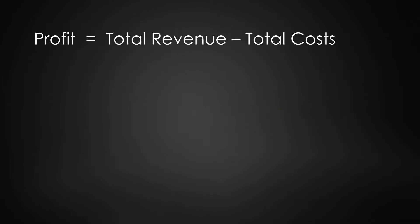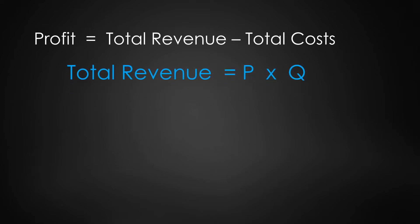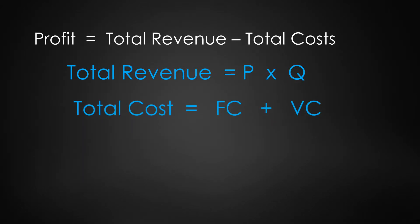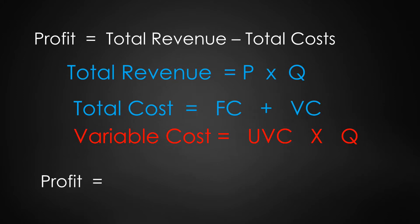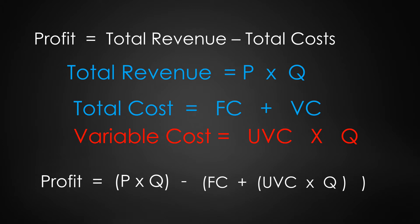Now that we've defined total revenue and total cost, we're ready to calculate profit. Profit is total revenue minus total cost, where total revenue is price times quantity sold, and total cost is fixed cost plus variable cost. To get variable cost, we multiply the unit variable cost (UVC) by the quantity sold. So profit equals P times Q minus (FC plus UVC times Q).